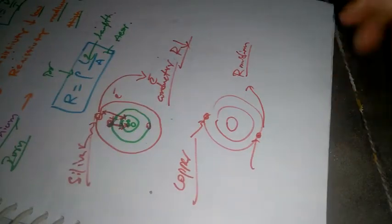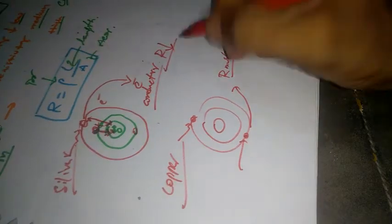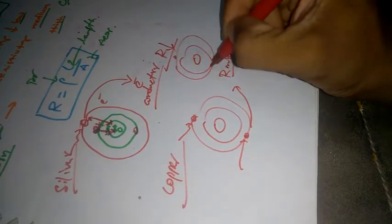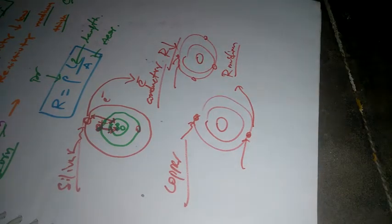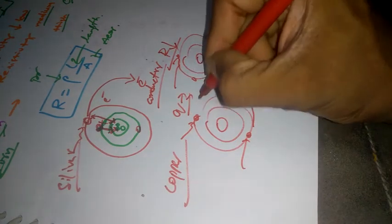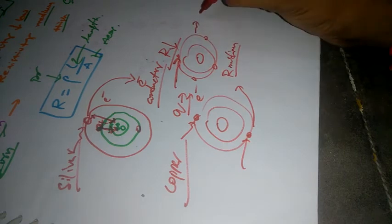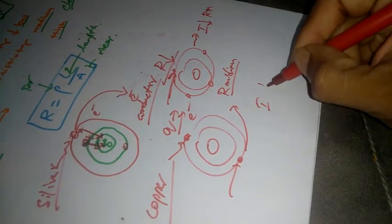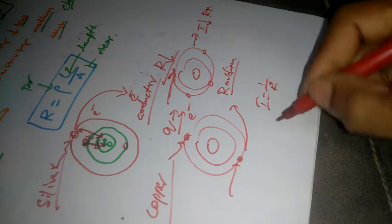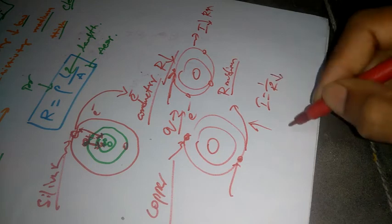Now aluminum. Aluminum has a flow of valence electrons of 3, so current flows on the other side. Resistivity is equal to R, and resistivity is equal to current.